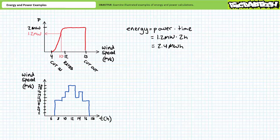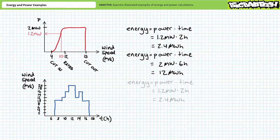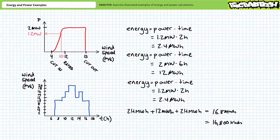For the first two-hour period at 10 meters per second wind, the turbine produces 1.2 megawatts times two hours, or 2.4 megawatt hours. For the middle six-hour period at 12 meters per second or greater, the turbine produces two megawatts times six hours, or 12 megawatt hours. For the last two-hour period at 10 meters per second, the turbine produces 1.2 megawatts times two hours, or 2.4 megawatt hours. In summation, the turbine produces 2.4 + 12 + 2.4 megawatt hours, or 16.8 megawatt hours of energy, which we could also express as 16,800 kilowatt hours.